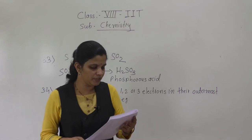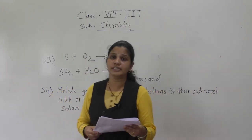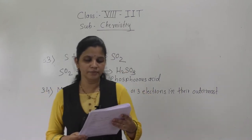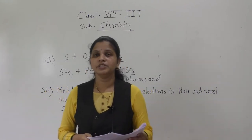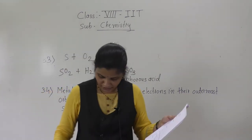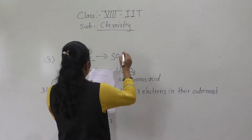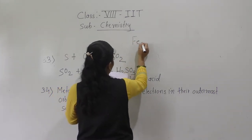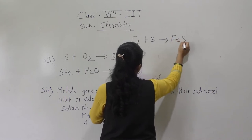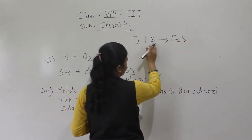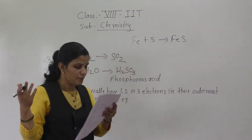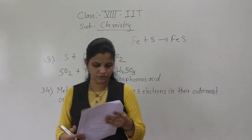Question number 36: is the following equation balanced or unbalanced? The equation is Fe + S → FeS. Fe has 1 atom on each side, sulphur also has 1 atom on each side — so it is a balanced equation.